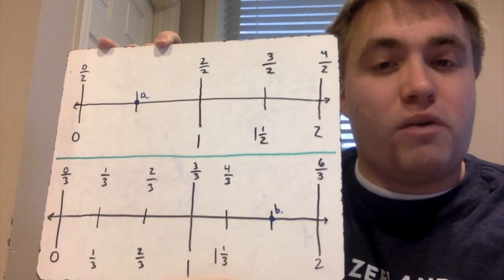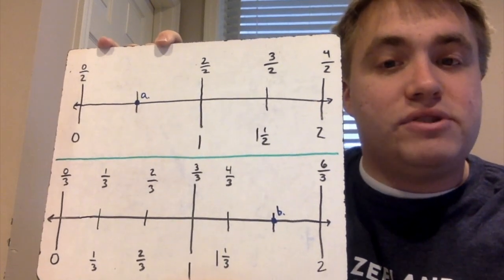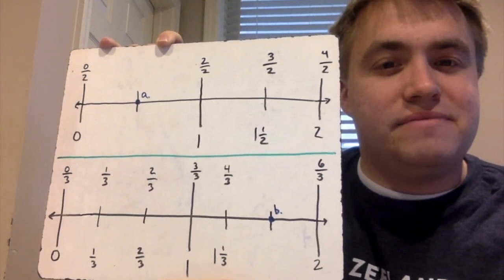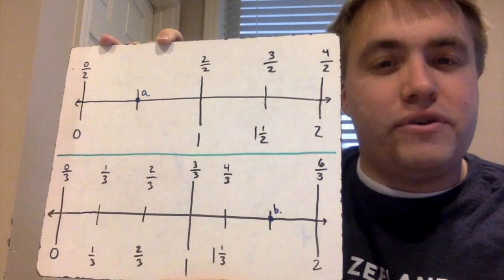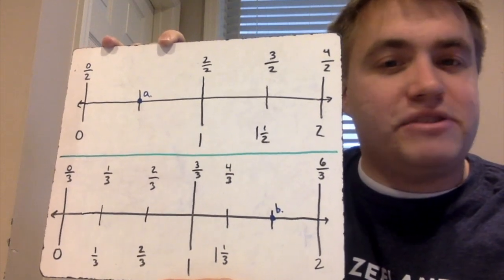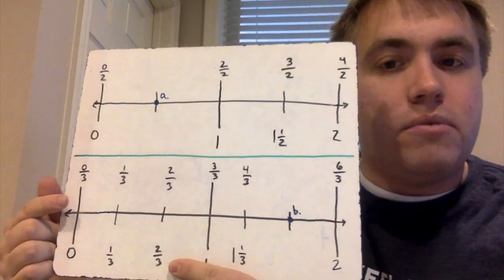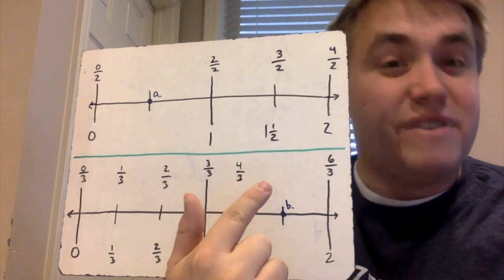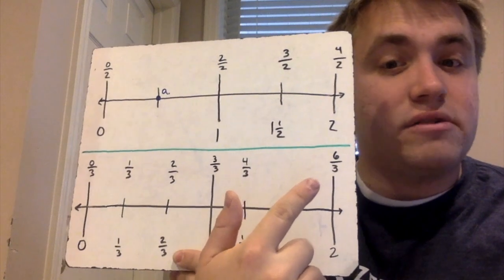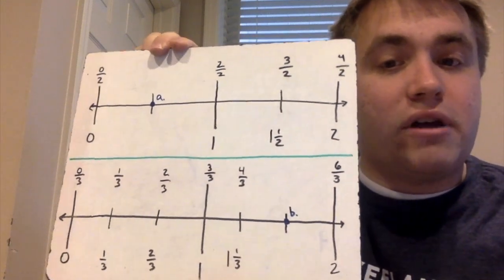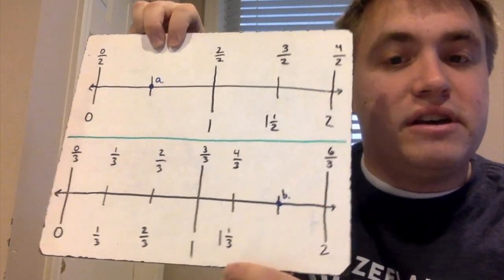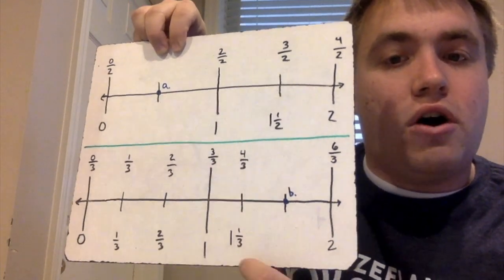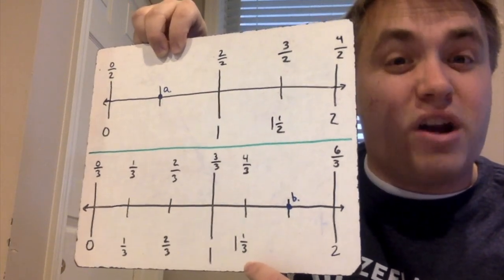Just like the first one, try to figure out what point B is going to equal using our pattern. Hopefully you got five-over-three by just continuing that pattern from zero-thirds, one-third, two-thirds, three-thirds, four-thirds, five-thirds, and six-thirds. Notice down here on my number line, I also have the equivalent written as a mixed fraction — so four-over-three also equals one and one-third.